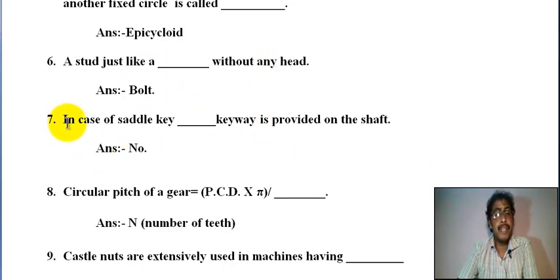Number seven: in case of saddle key, no keyway is provided on the shaft. Generally half portion of the key in hub or boss and half portion in shaft, but in saddle key no keyway is provided on the shaft.